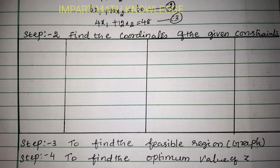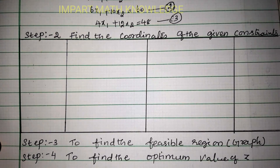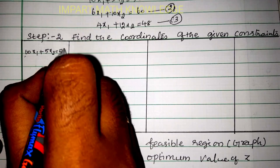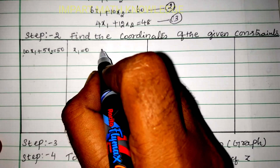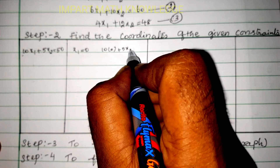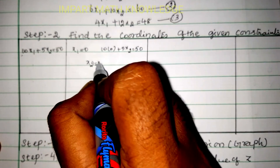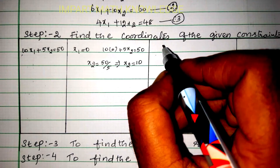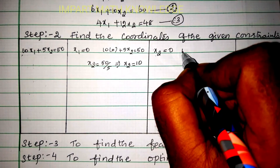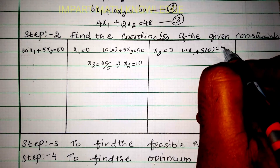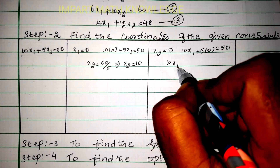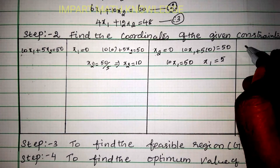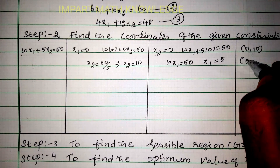Step 2 is to find the coordinates for the given constraints. For the first constraint 10x1 + 5x2 = 50: putting x1 = 0 gives x2 = 10, and putting x2 = 0 gives x1 = 5. So the coordinates are (0, 10) and (5, 0).